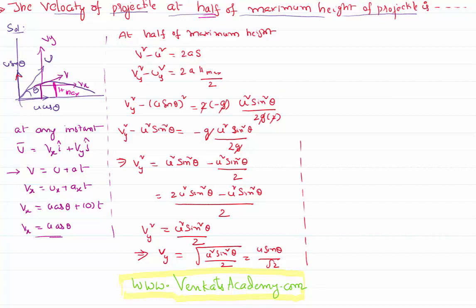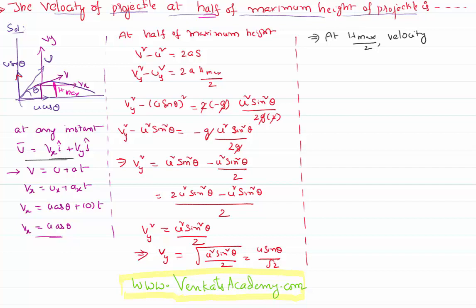Since the projectile has velocity both along the x-axis and y-axis, the net velocity at H_maximum/2 is: V = Vx·î + Vy·ĵ = u·cosθ·î + (u·sinθ/√2)·ĵ. This is the velocity vector of the projectile at half the maximum height.